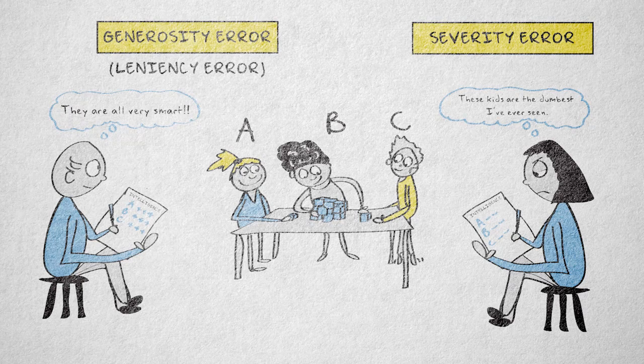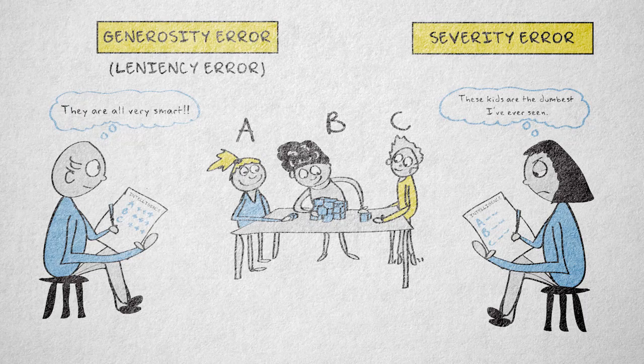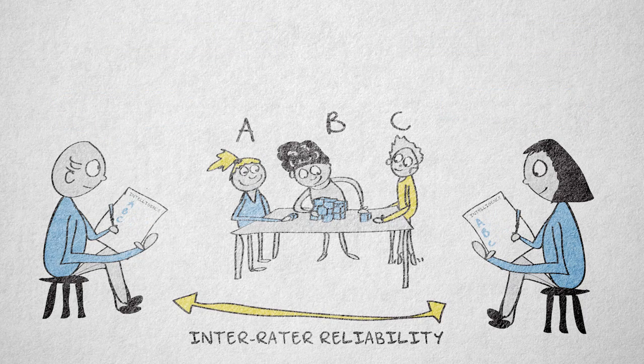It can be hard to detect, let alone avoid, halo effects and generosity or severity errors. One approach is to use several raters that are trained to use clearly defined coding schemes. Checking the inter-rater reliability and average ratings for each rater can help to detect any systematic bias between raters.